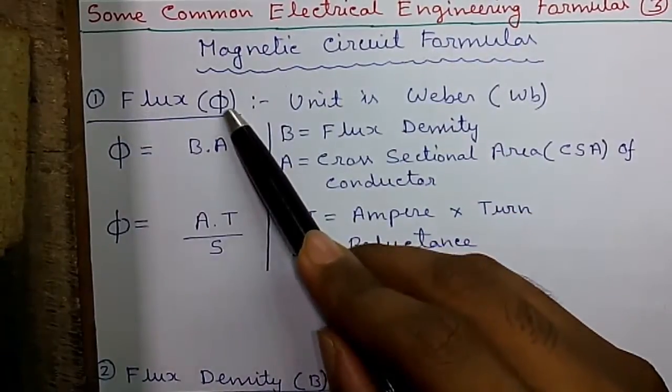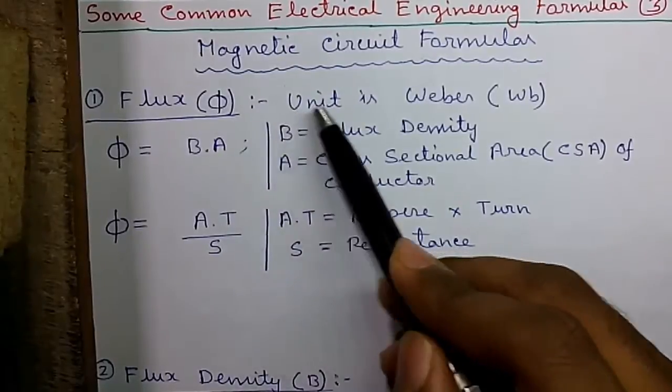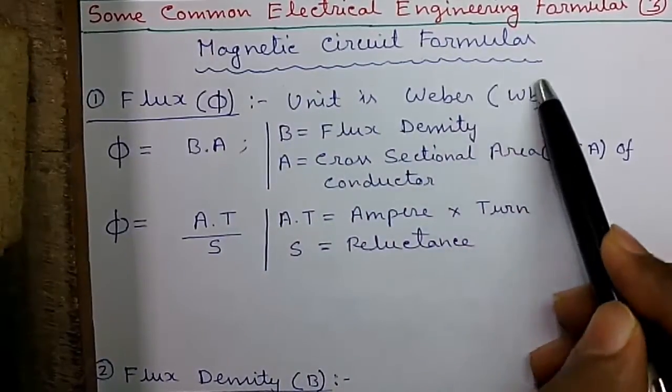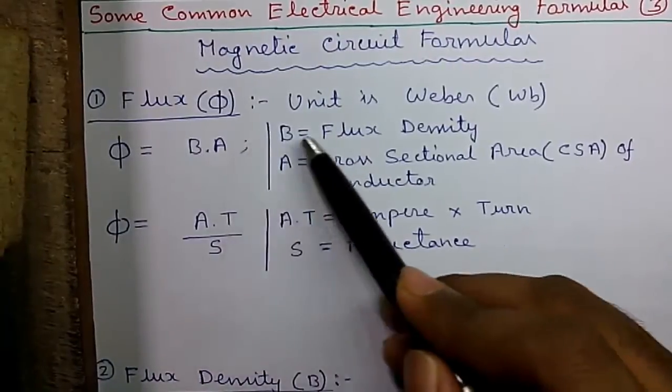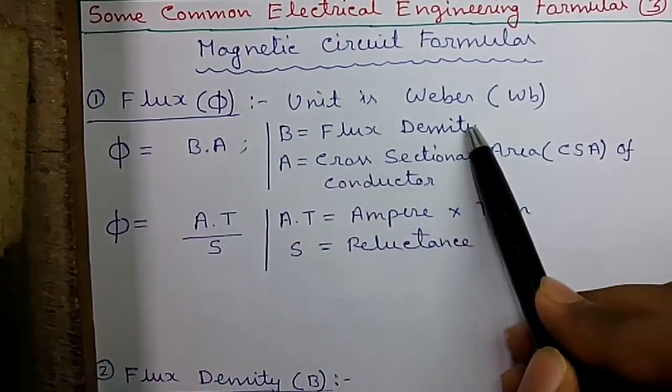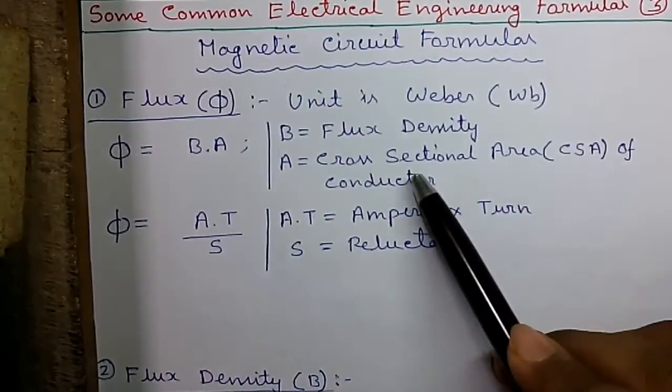Formula number one, the flux, represented by phi and unit of flux is Weber, represented as WB. So phi equals to B into A, where B is the flux density and A is the cross sectional area or CSA of the conductor.